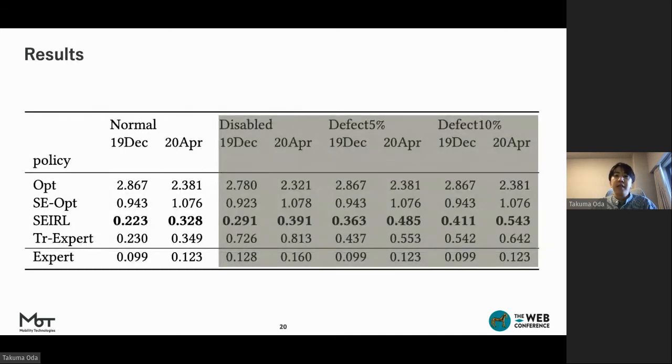Now I'd like to look at the results we got. We evaluated the imitation performance of each policy for two test datasets. Our approach, SAIL, scored the best for both datasets, with an error of about 33% in the April dataset. There is a large gap between SE-OPT and SAIL, which can be interpreted as drivers memorizing a more complex reward function rather than simply taking the shortest possible route to potential customers.